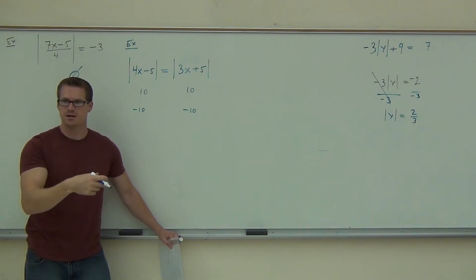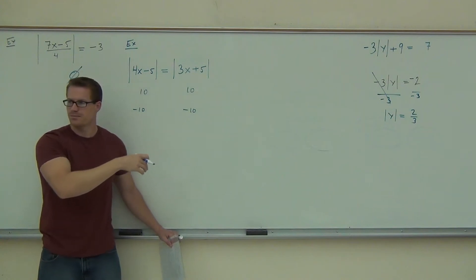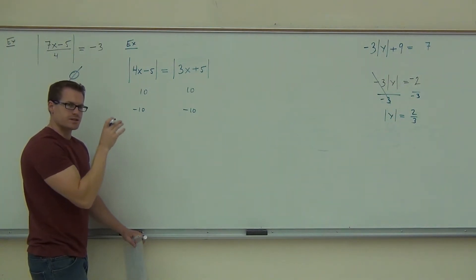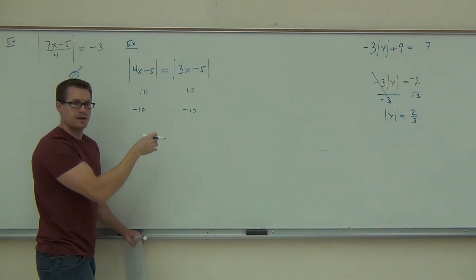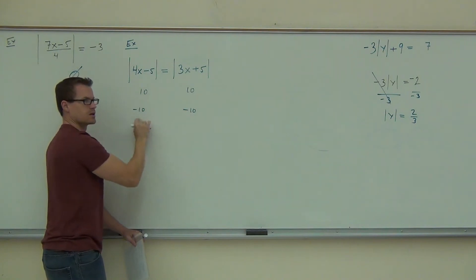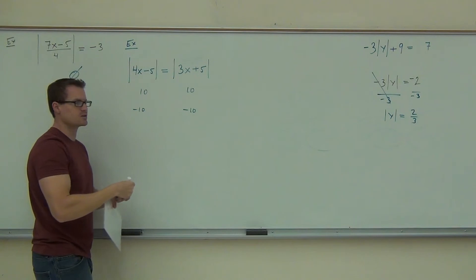Sure, because absolute value of negative 10 is 10. Absolute value of negative 10 is 10. You guys still with me so far? What's another case where these absolute values would be equal to each other? I gave you two, where they're exactly the same number here or exactly the same number here.